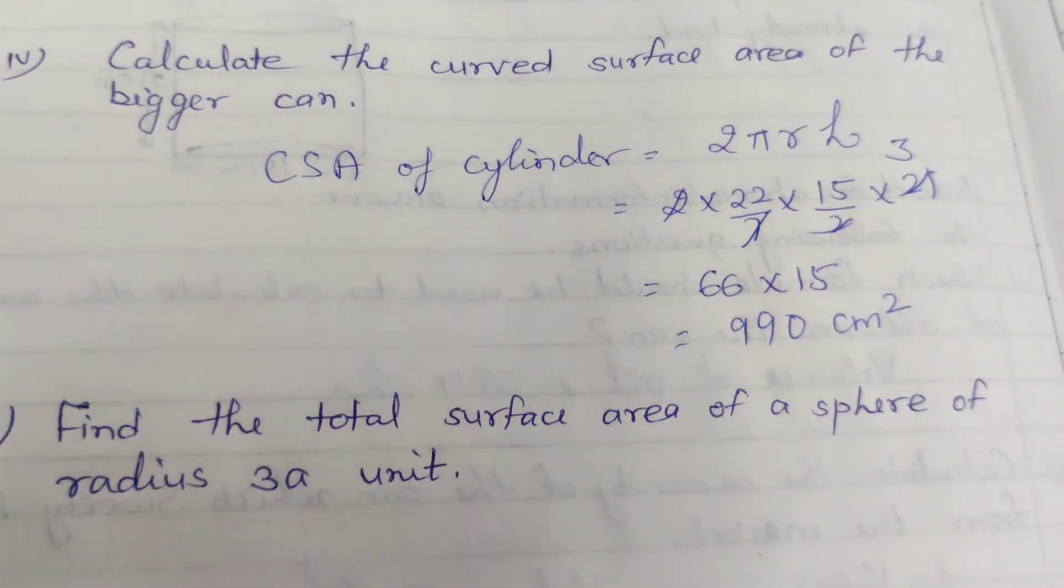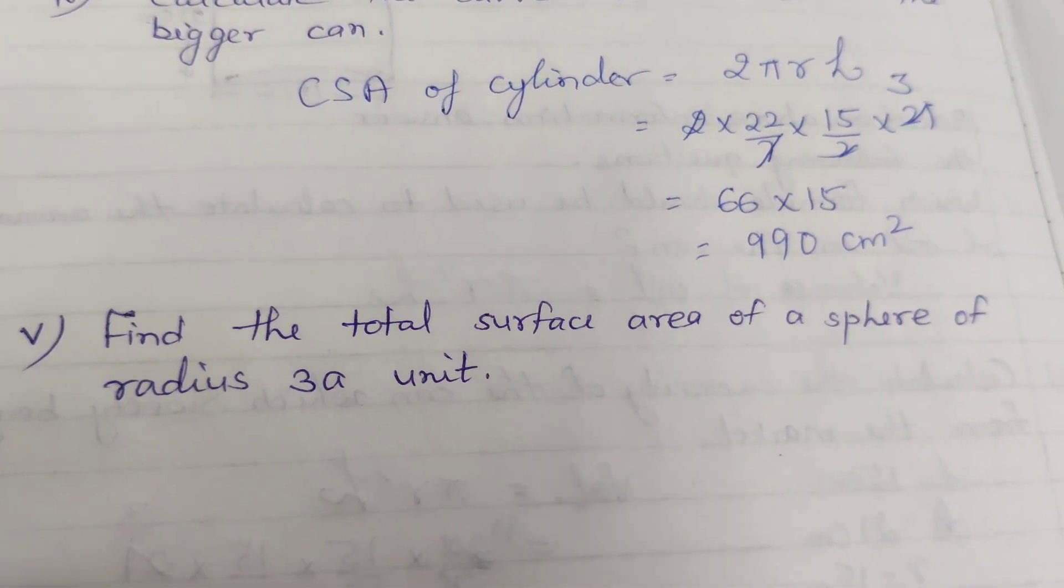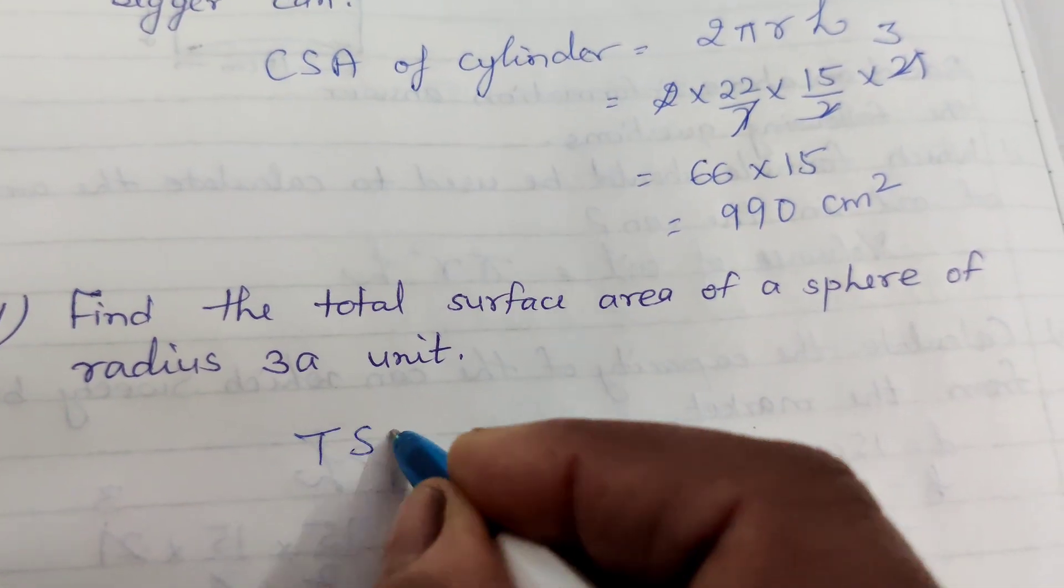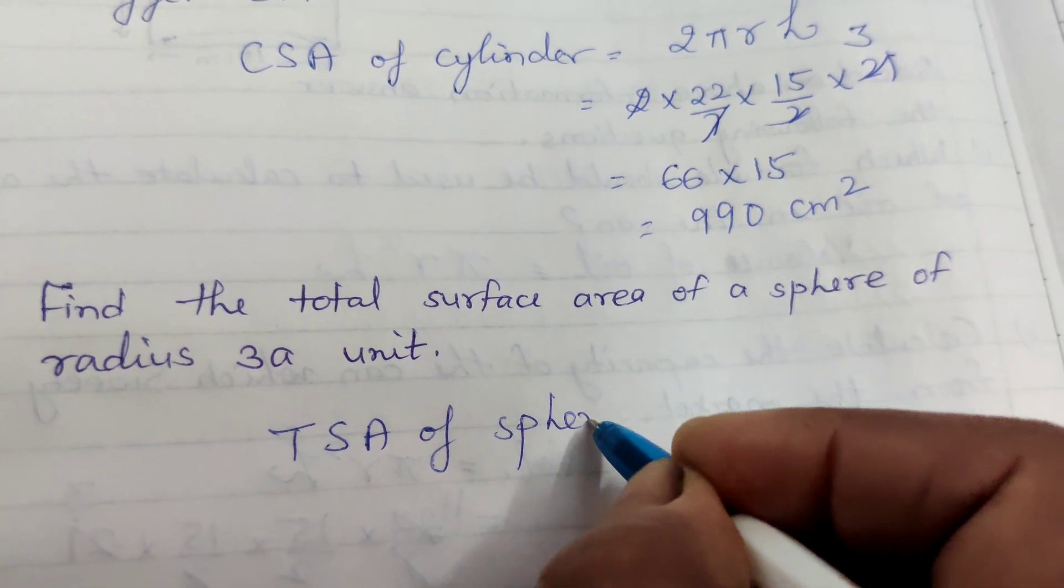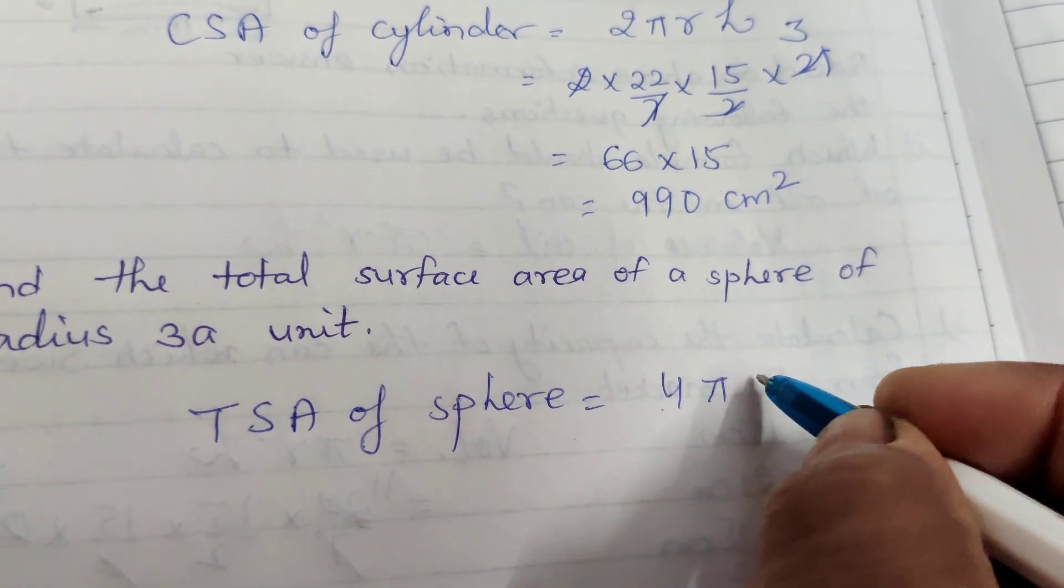Next, find the total surface area of a sphere of radius 3 unit. Total surface area of a sphere means the formula of total surface area is 4 pi R square.